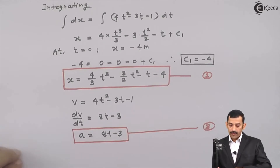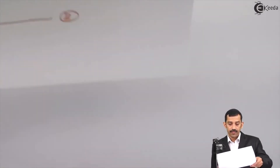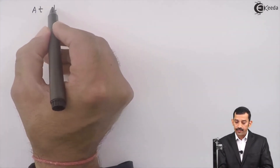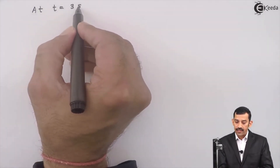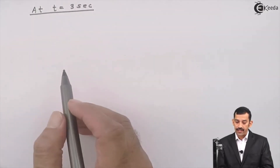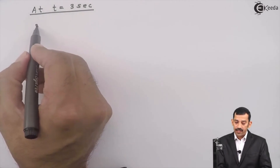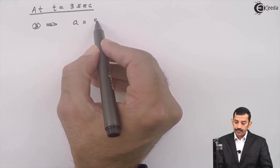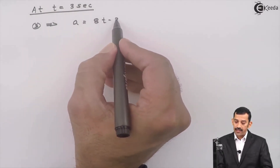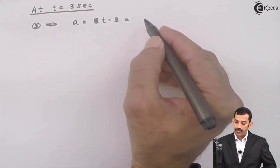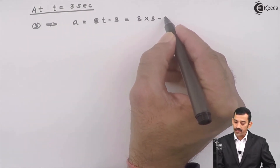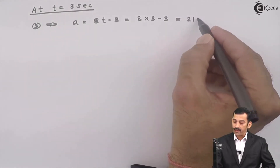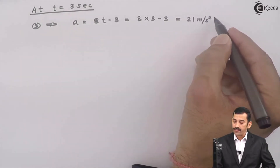At t equal to 3 seconds, for the first part, we substitute into equation number 3, the equation of acceleration: a equal to 8t minus 3. With t equal to 3 seconds, this becomes 8 into 3 minus 3, which equals 24 minus 3, giving 21 meters per second squared. This is the acceleration at t equal to 3 seconds.